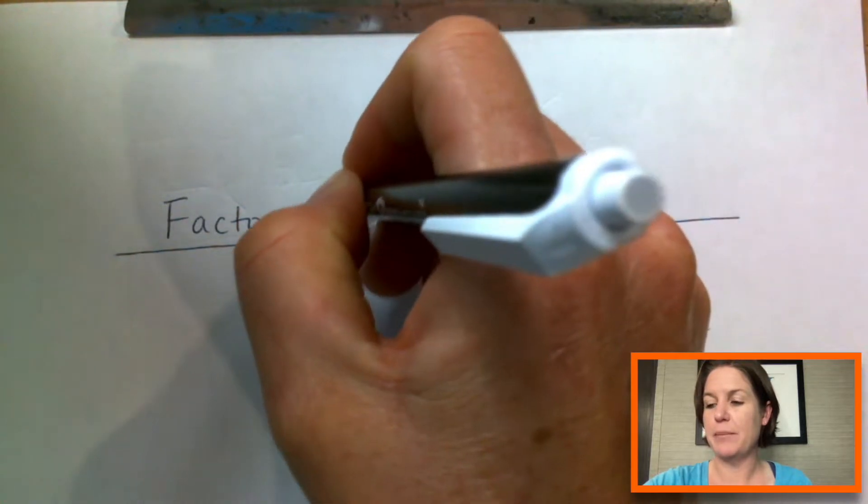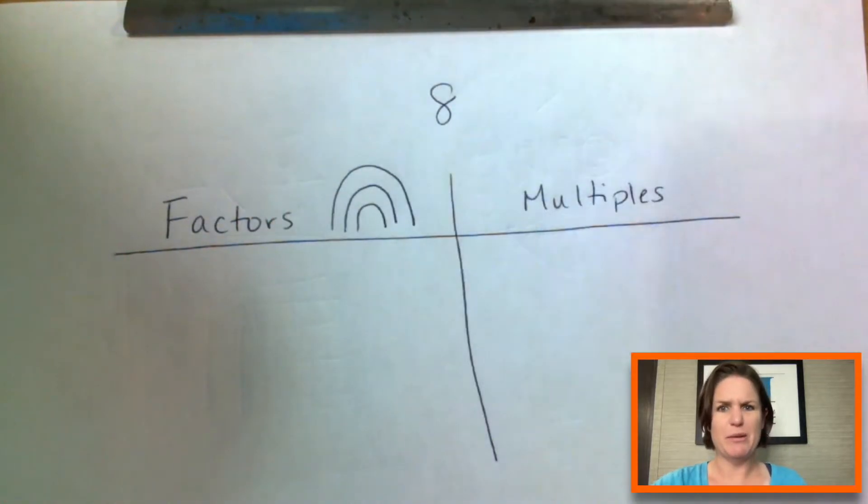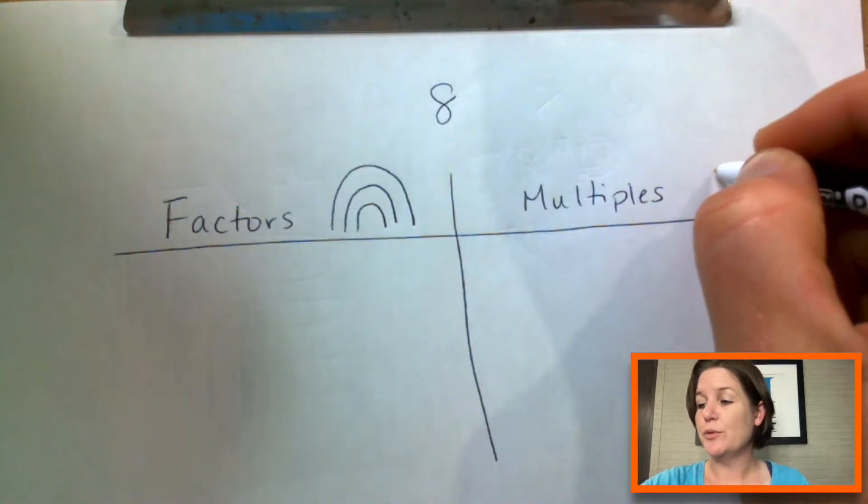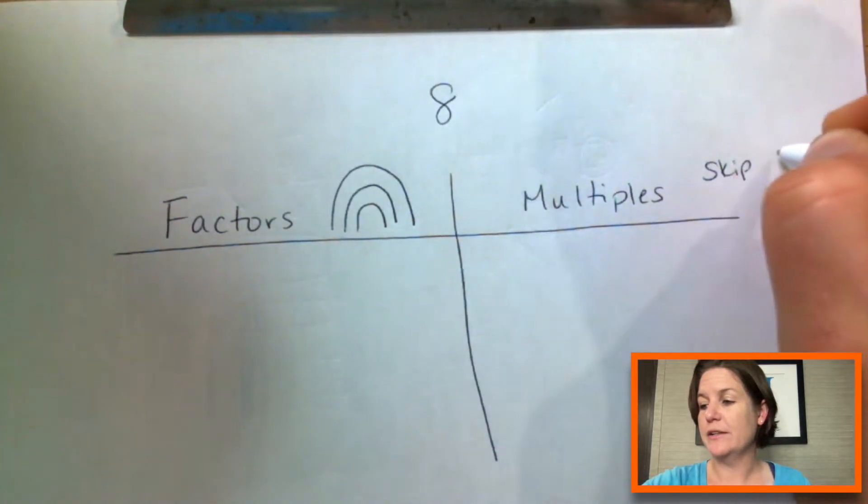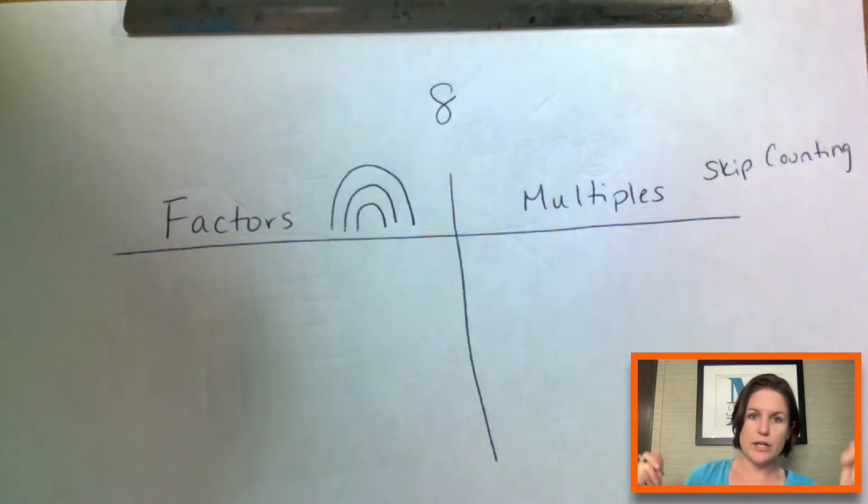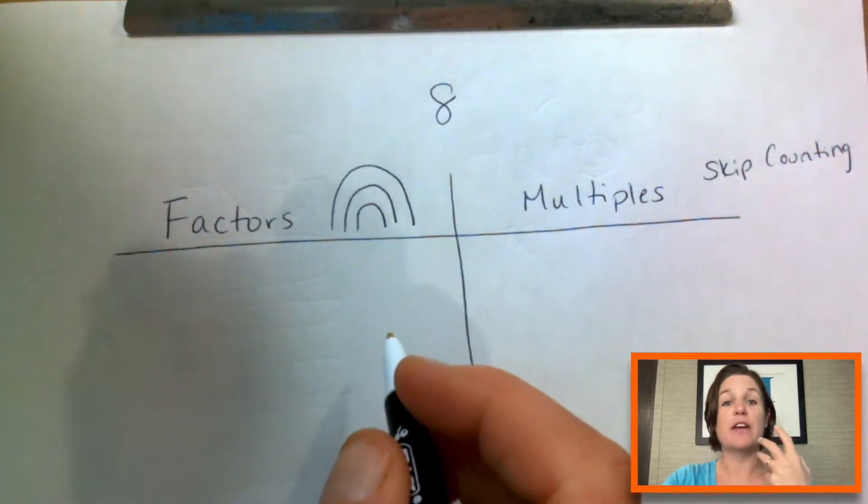Okay. So factors, think of the factor rainbow and you might be like, well, what's a factor rainbow? I'm going to show you, just hang on a second. And then multiples is skip counting. Like if we were going to skip count by fives, we would go five, 10, 15, 20, 25, 30, right? Okay. So factor rainbow, multiples skip counting.